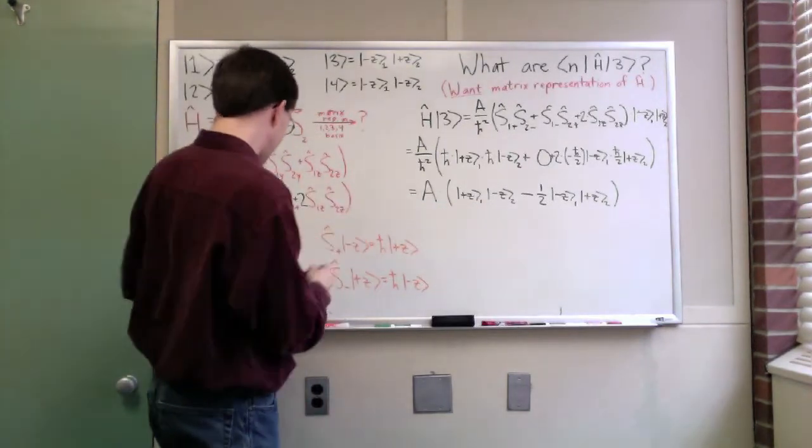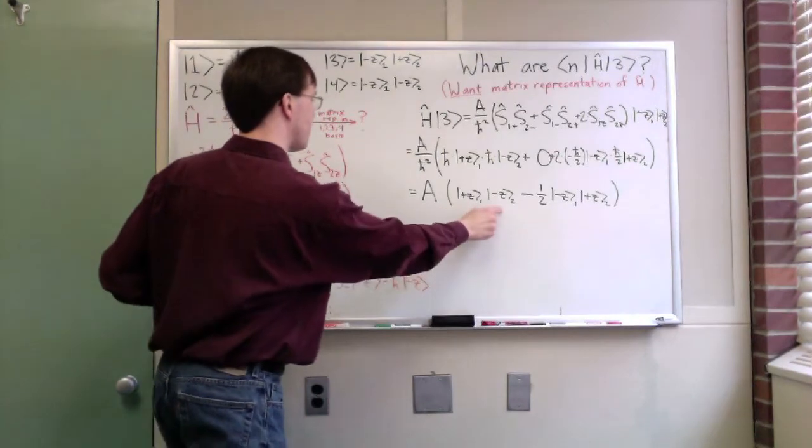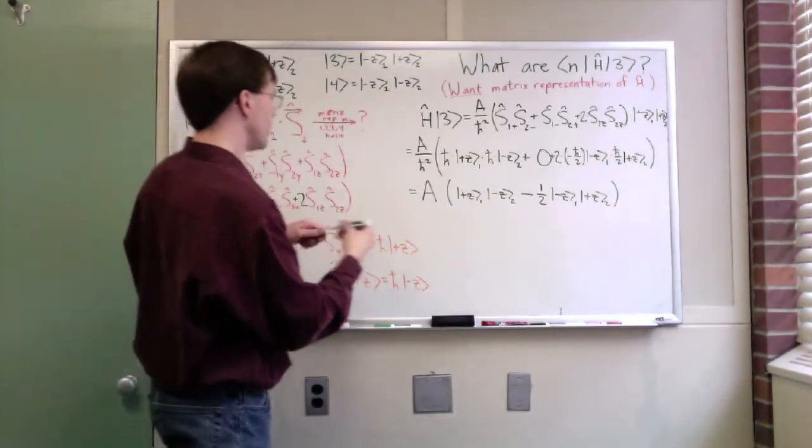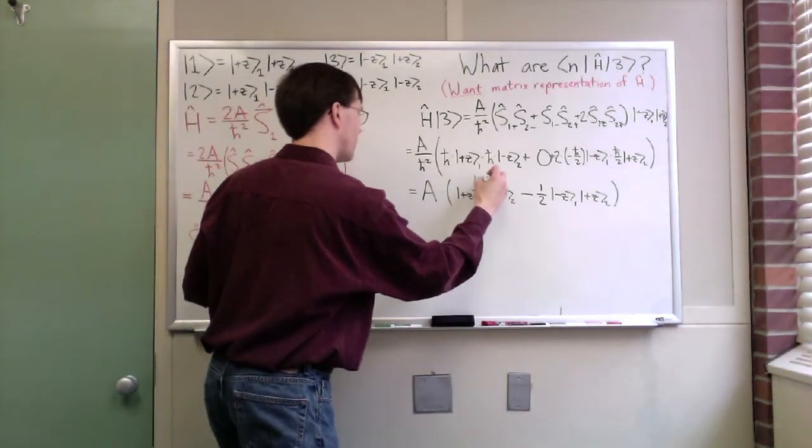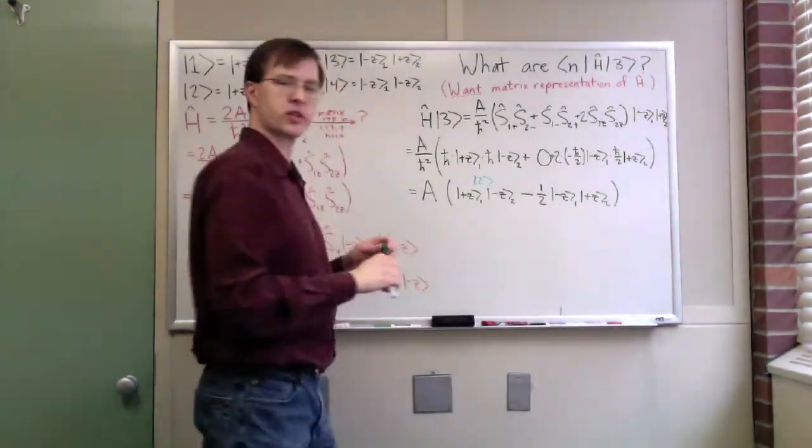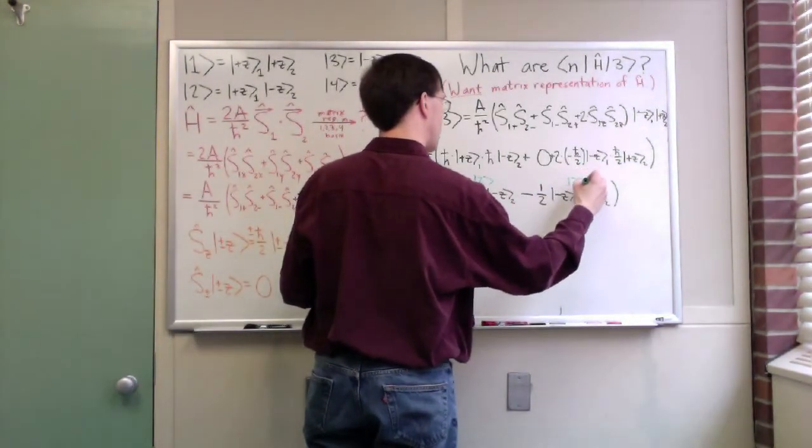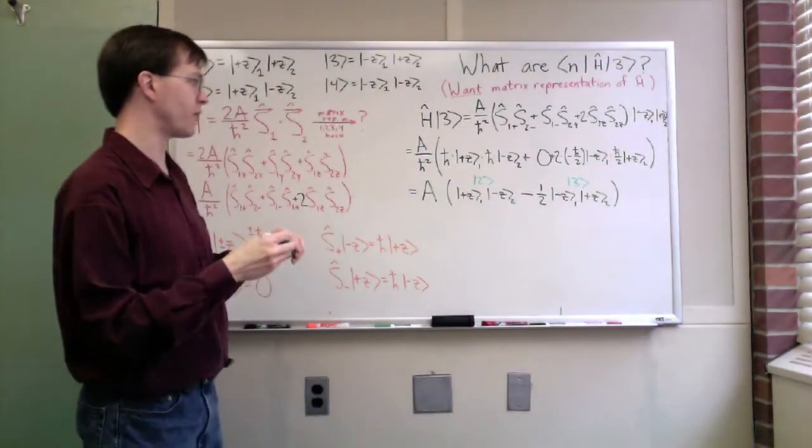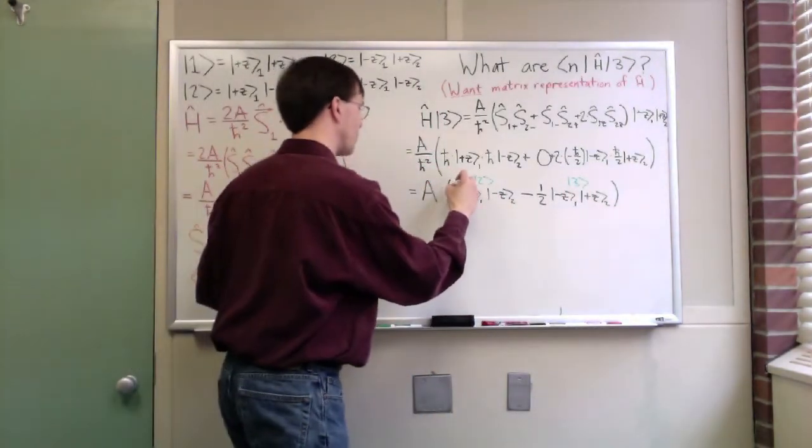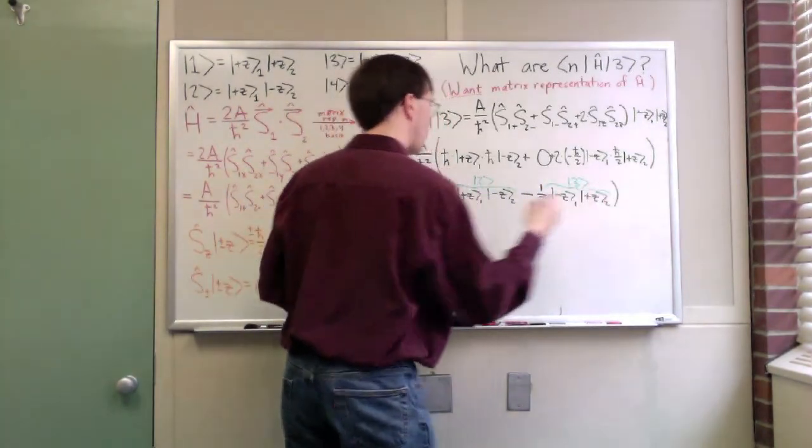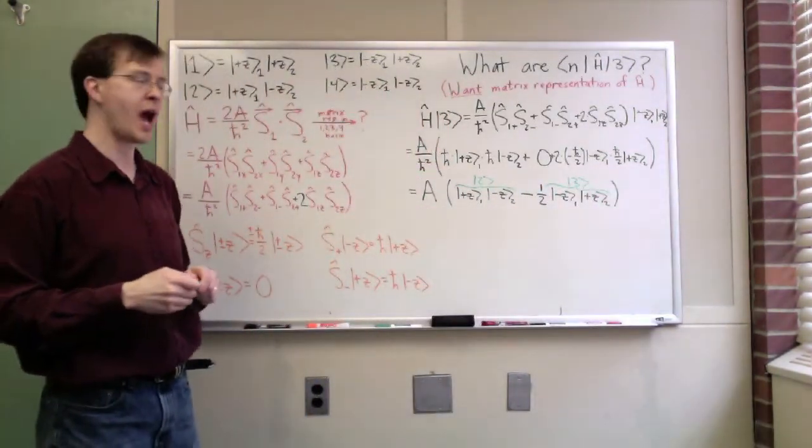When you know the answer in advance, you recognize when you get the wrong one. So 2 times 1/2 times 1/2 gives me 1/2 times minus z for particle 1 and plus z for particle 2. If you really want to, you could recognize that this product, the plus z minus z for 1 and 2, looks a lot like state 2. And minus z plus z, of course, that was an eigenstate in the first place. So this is still state 3, just with a minus 1/2 prefactor out front, if you want to recognize these in our basis.